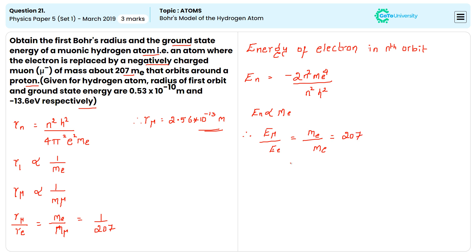Eμ is equal to 207 times Ee, then if you substitute the values 207 × 13.6 eV, which is equal to 2.8 keV.